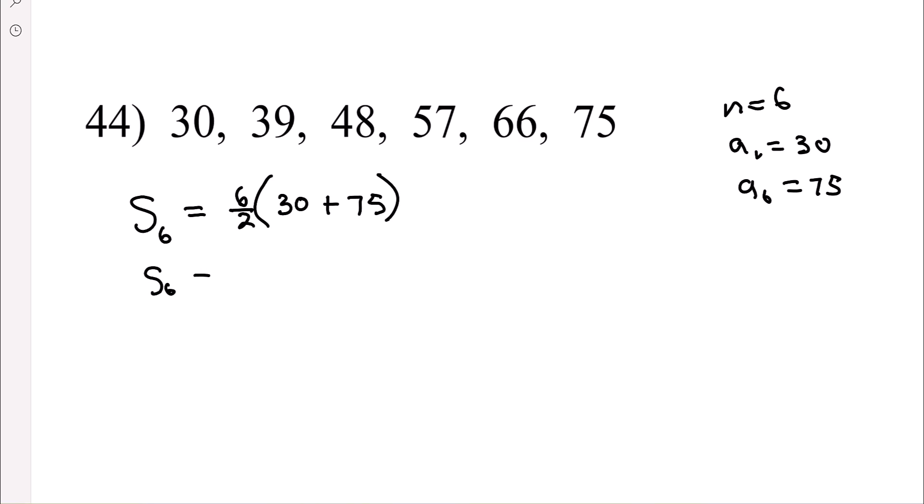So I'm going to simplify that. So that's 3 times 105. We just added those two together. So just to double check, 3 times 30 plus 75, that's in parentheses, enter. Yep, 315.